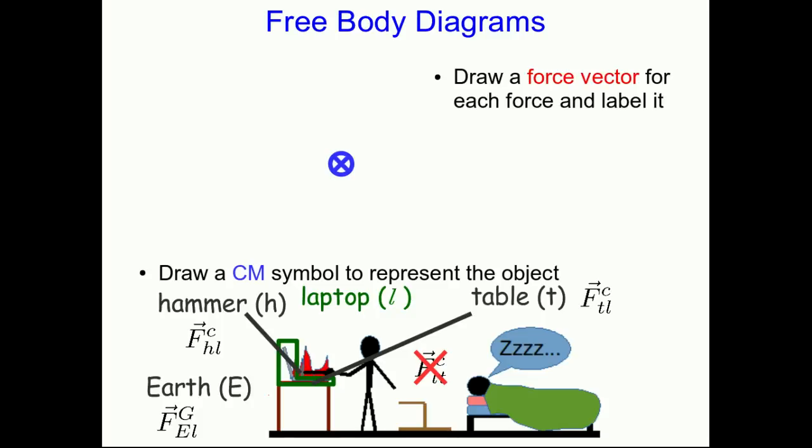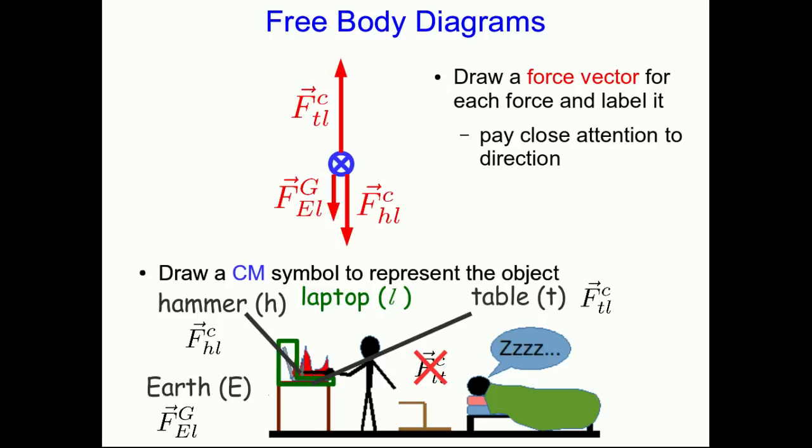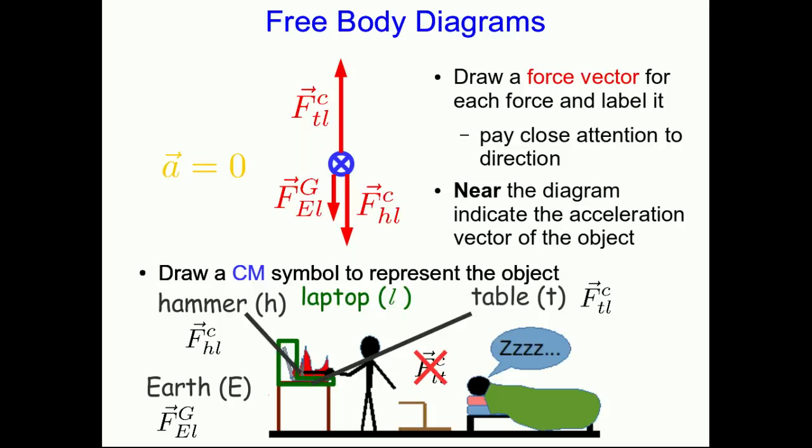Now draw the force vector for each force that you've already identified, and label it. Pay close attention to direction. If you know some force is bigger than another, you might as well draw it that way, but now isn't really the time to be worrying about how big these forces are. Just get them pointed in the right direction. And finally, somewhere near the diagram, indicate the direction that you think the object is accelerating. Or, if it's not accelerating, then say its acceleration is zero.